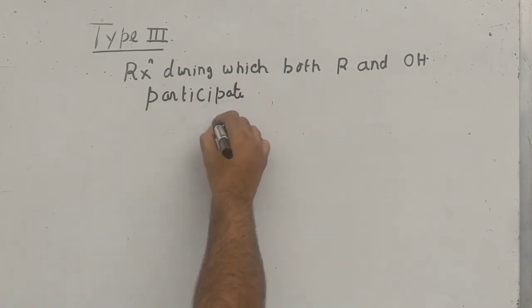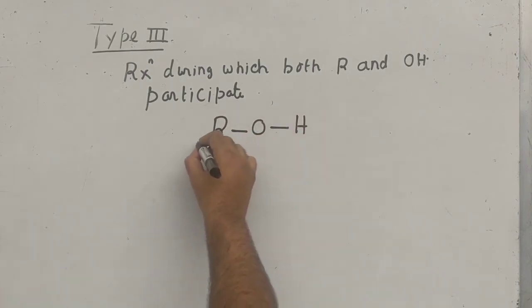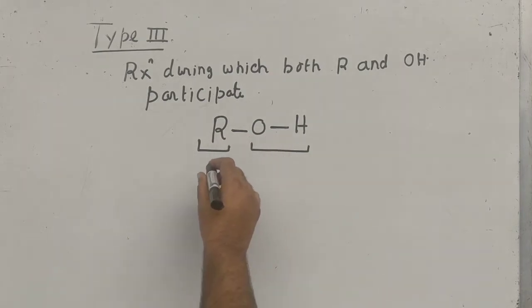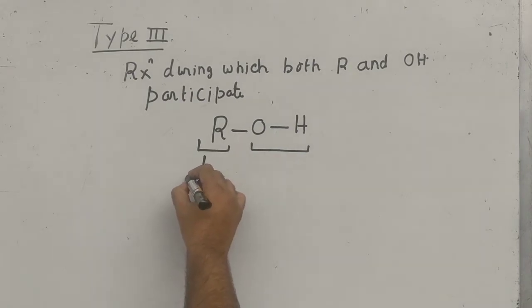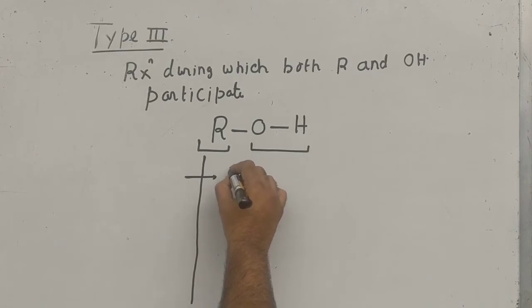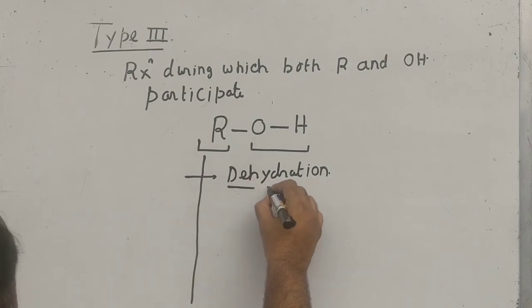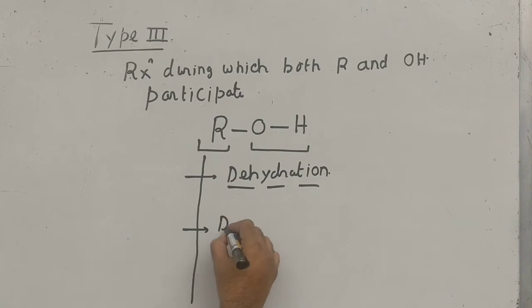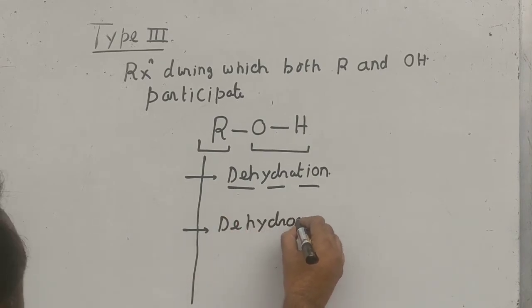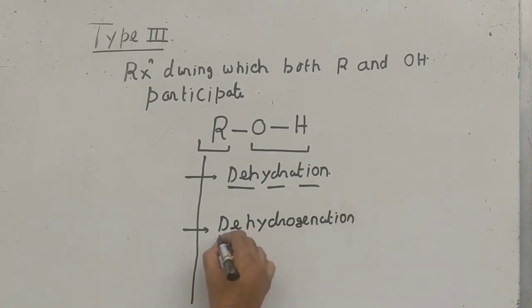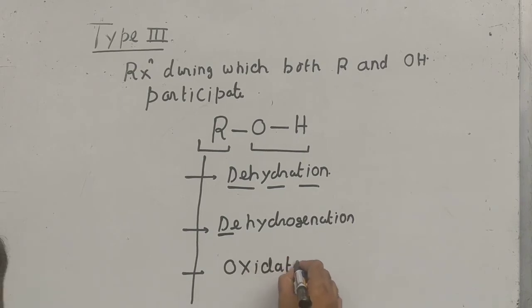So we have a general formula R-OH. During this category reaction, both R and OH will participate. In this we are going to discuss three properties. The first one is the reaction with concentrated sulfuric acid — dehydration, which is removal of water, done in 11th class. The second one is called dehydrogenation, which means removal of hydrogen — 'D' in chemistry means removal. And the third one is called oxidation. In today's class we will discuss these three reactions.